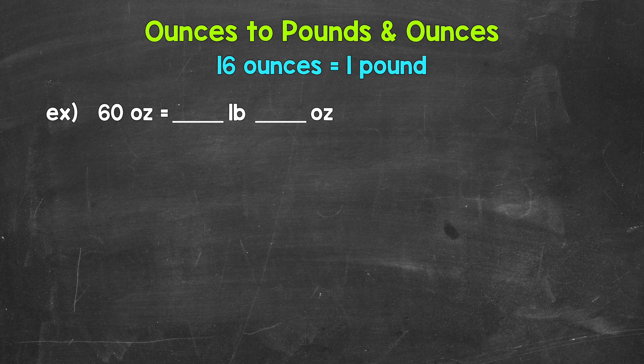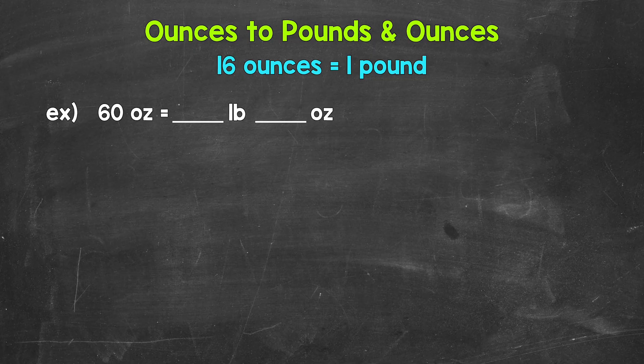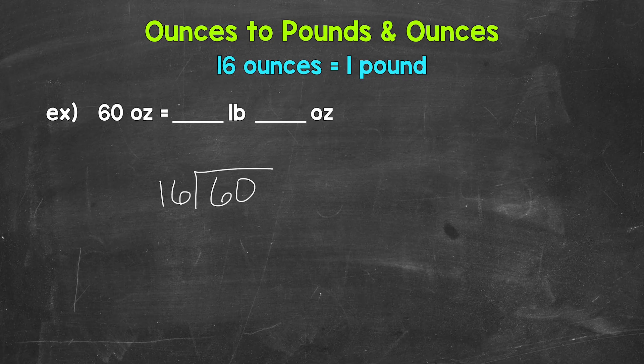Let's jump into our example where we have 60 ounces. So we need to divide by 16 here to convert this to pounds. So let's set this up as 60 divided by 16. How many whole groups of 16 in 60? Well, three.